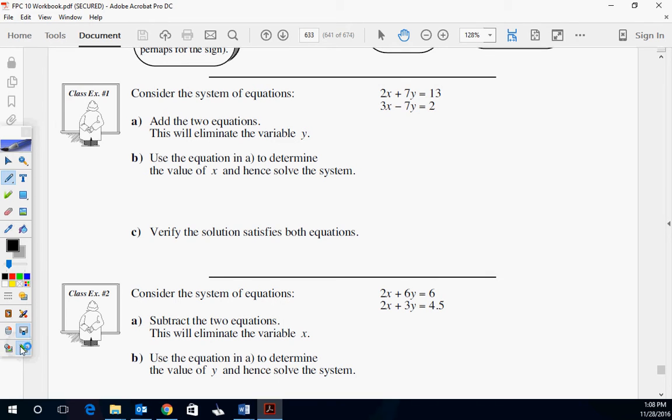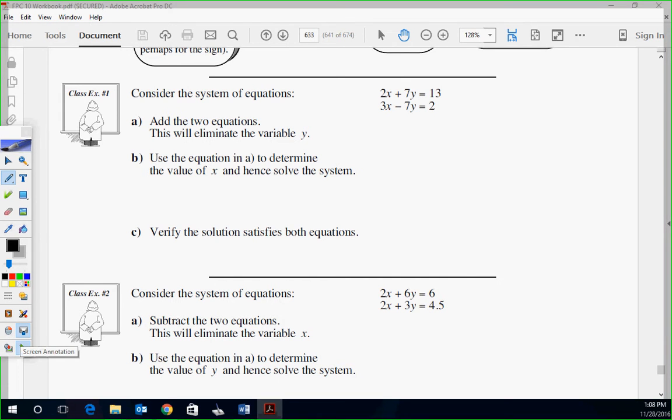Here it is. Consider the system of equations. 2x plus 7y equals 13, 3x minus 7y equals 2. Add the two equations. That's weird. Add the two equations. Yeah, that's what it means. You're going to put a plus sign right here. You want to add them. Yeah, exactly. Add it straight down. 2 plus 3. Eliminate. 5x equals 15. x is 3. Wow. Okay, now, they gave you a baby step one. So let's not be sold yet.